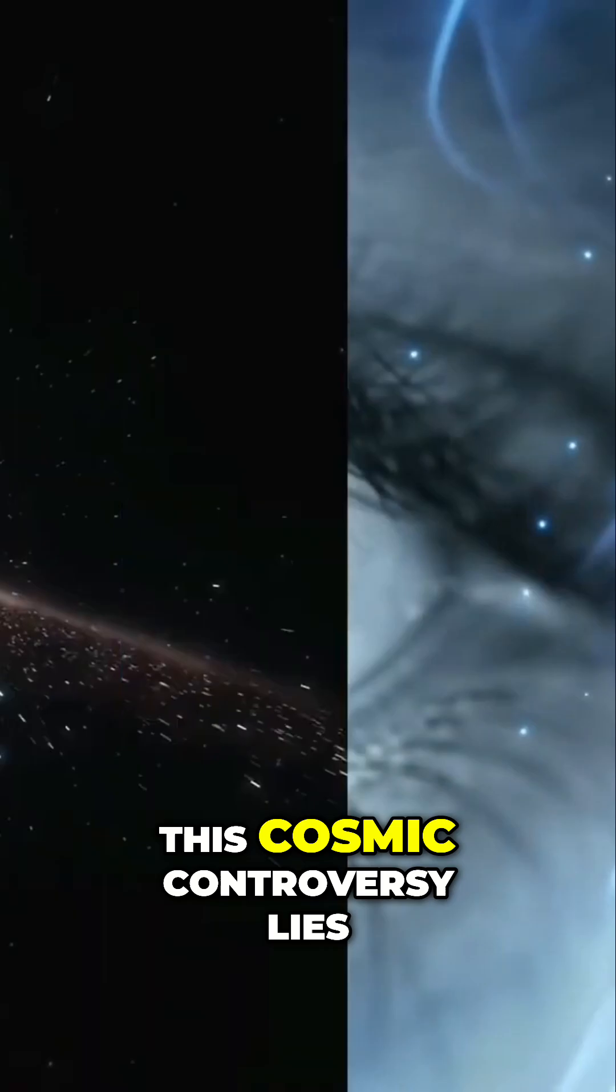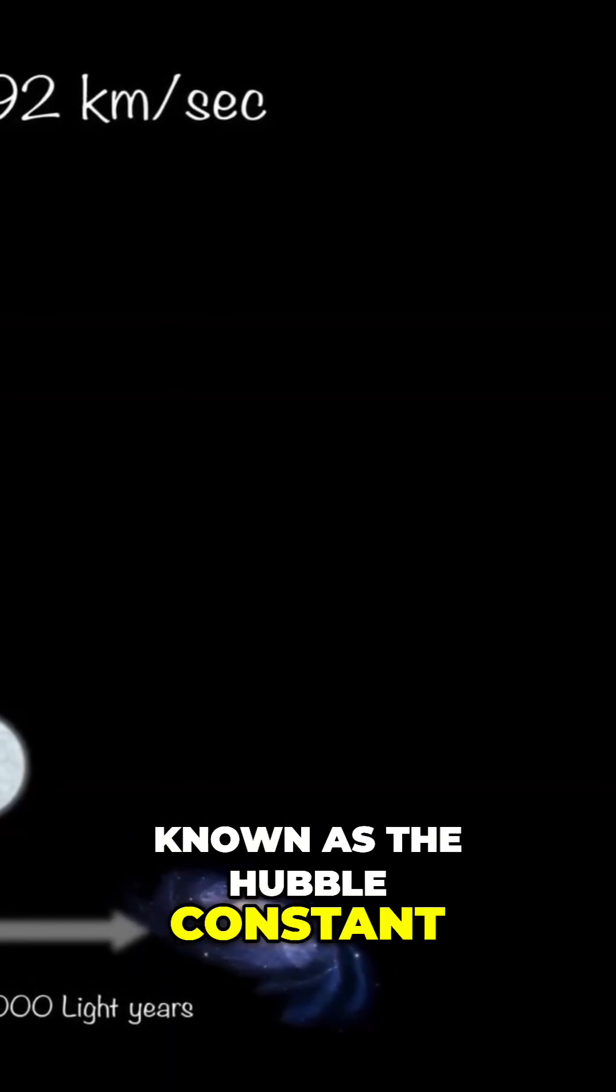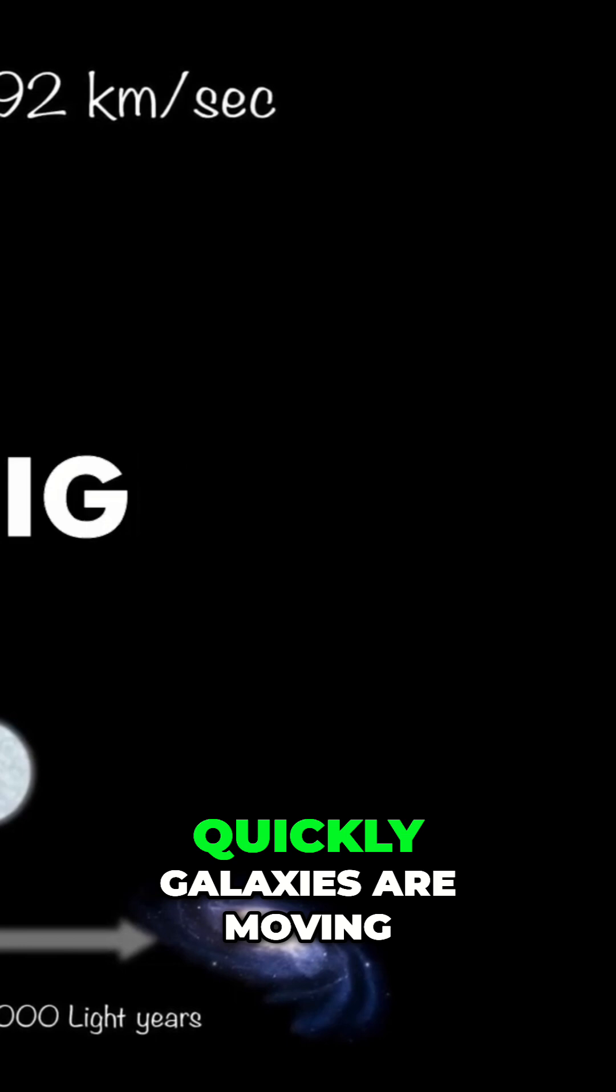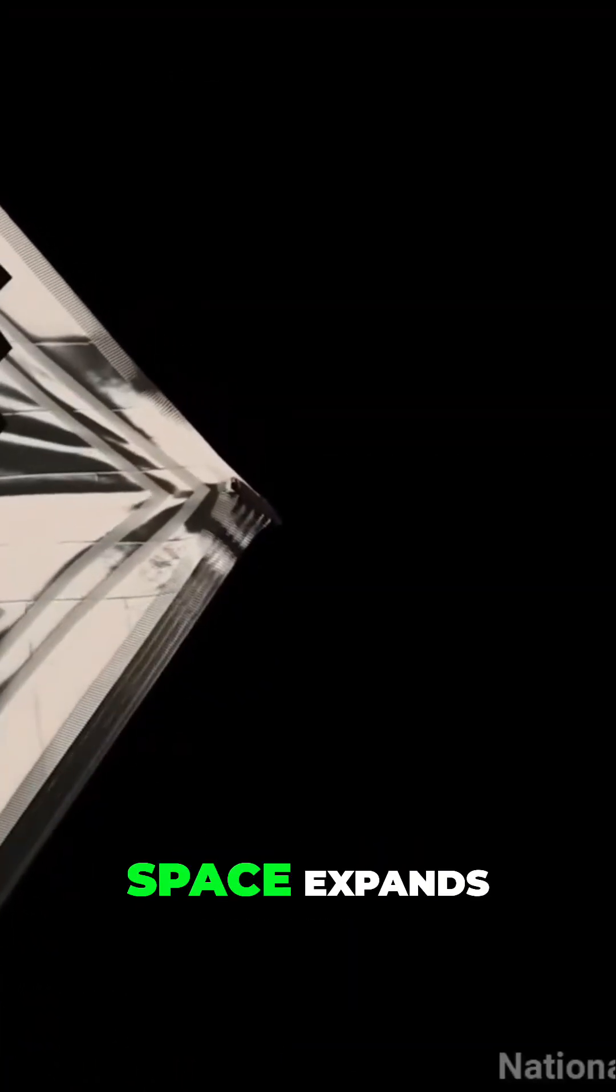At the heart of this cosmic controversy lies a deceptively simple number known as the Hubble Constant. This value measures how quickly galaxies are moving away from us and from each other as space expands.